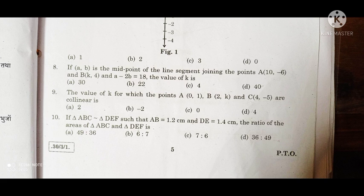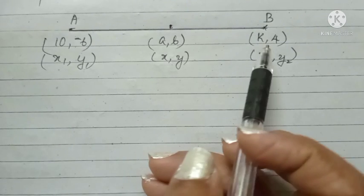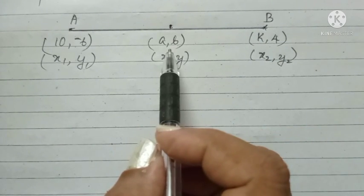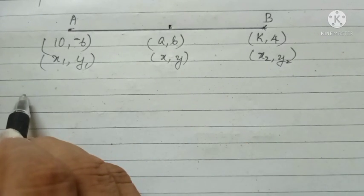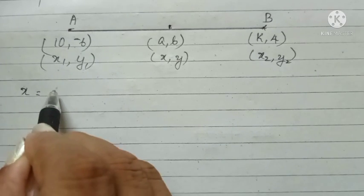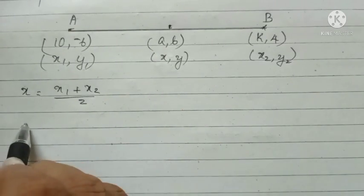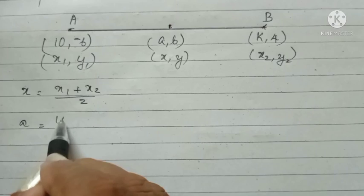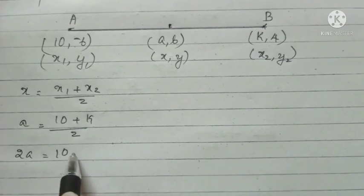Question number 8. If (a, b) is the midpoint of the line segment joining the points (10, -6) and (k, 4), and a minus 2b is equal to 18, the value of k is. In the question, the points 10, -6 and k, 4 are given and the point (a, b) is the midpoint. Using the midpoint formula, we can find the midpoint using the formula x is equal to x1 plus x2 by 2. Therefore, a equal to 10 plus k by 2. That means 2a equal to 10 plus k.